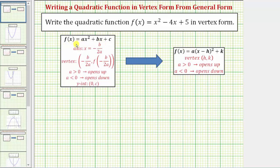Our goal is to write the quadratic function in vertex form, which is this form: f of x equals a times the quantity x minus h squared plus k, where in this form, the ordered pair h comma k is the vertex of the parabola.